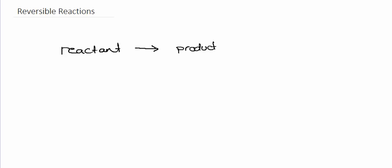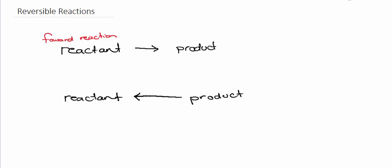Before we go too far into equilibrium, we're just going to recap the concept of reversible reactions. During a chemical reaction, what we generally see is reactants being converted into products. However, in some situations, those products can revert back into reactants. When reactants are being converted into products, we refer to that as the forward reaction, and when products are converted back into reactants, we refer to that as the reverse or back reaction.